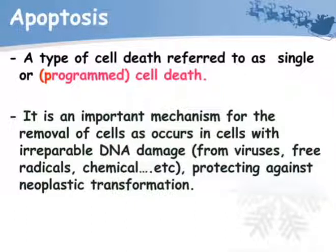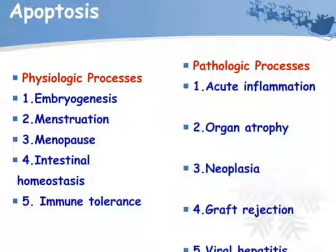Apoptosis is a type of cell death referred to as single or programmed cell death. It is an important mechanism to remove cells with irreparable DNA damage from viruses, free radicals, and chemicals, protecting against neoplastic transformation. Physiologic processes include embryogenesis, menstruation, menopause, intestinal homeostasis, and immune tolerance. Pathologic processes include acute inflammation, organ atrophy, neoplasia, graft rejection, and viral hepatitis.